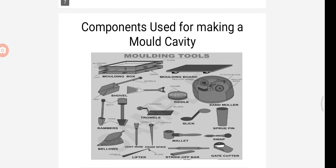Next we are going to see about what are the components used for making a mold cavity. The first one is the molding box, also called the molding flask. It is a frame or box sometimes made of wood or metal. Wood is mostly used because it is cheaper and boxes can be made quickly, though wood wears out quickly and is destroyed by contact with hot metal. Metal boxes are mostly made with steel.